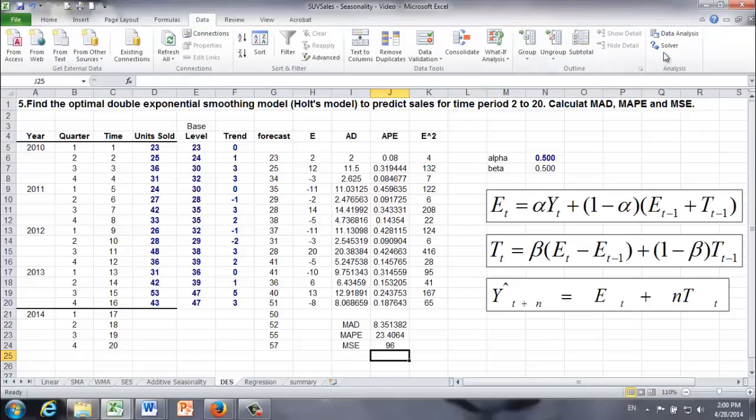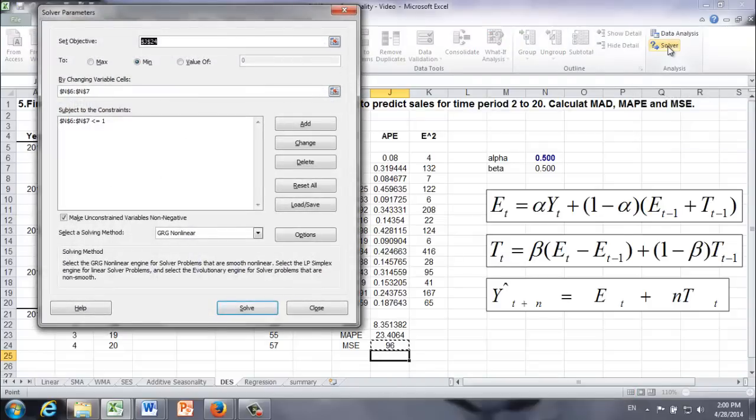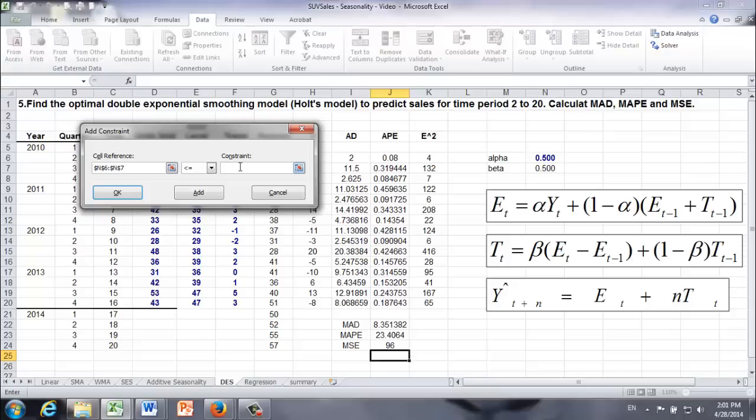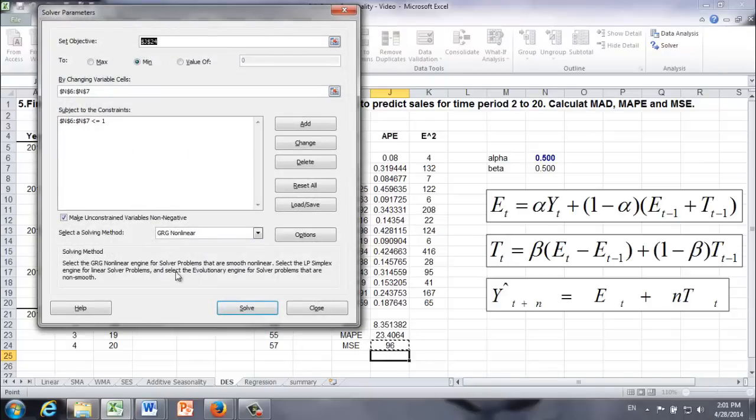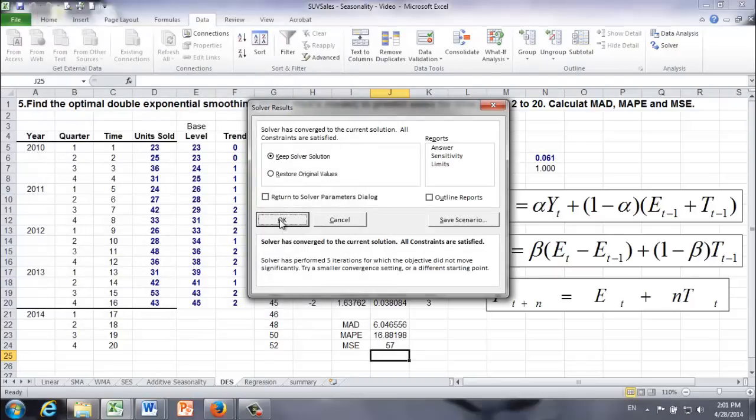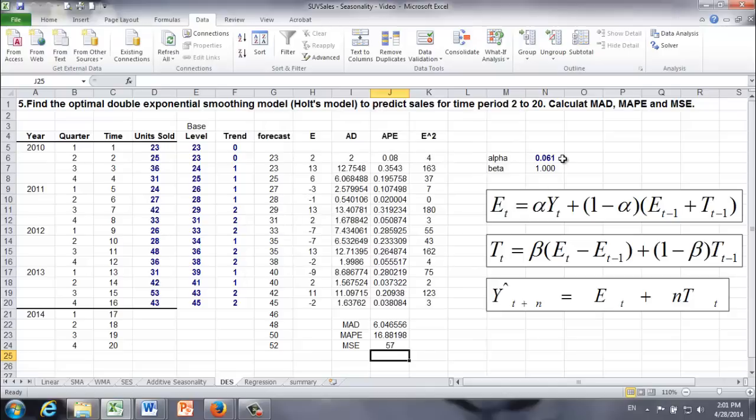We're going to use solver to find the optimal alpha value and beta value. Click solver. Let me reset it. Objective is our MSE in cell J24, which we would like to minimize. How do you do that? By changing alpha value and beta value. Constraints: alpha and beta are between 0 and 1. Check this box, make unconstrained variables not negative. Now we're ready. Selecting GRG nonlinear method and then solve. Keep solver solution. Here's what we find. The optimal alpha value is 0.061 and the optimal beta is 1. As a result, the minimal MSE value is 57.